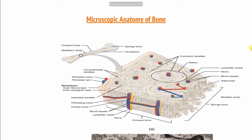With the microscopic anatomy of bone, if we cut the bone like this, we'll see the structure in the area. First, we have the osteon — this is the main unit of the compact bone, which is the osteon.